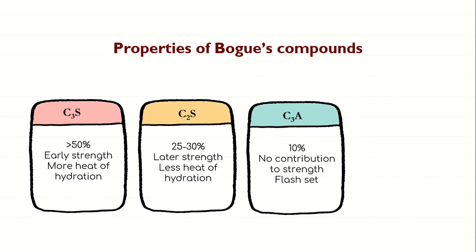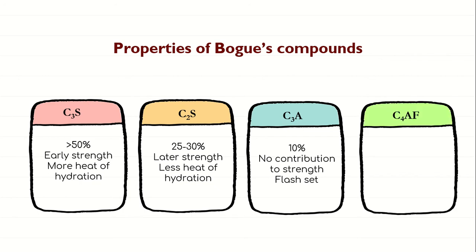The hydrate of C3A generally does not contribute to any strength, but it is responsible for binding all the particles together — all the ingredients of the concrete together. The percentage of C3A is around 10% in ordinary Portland cement.